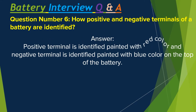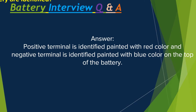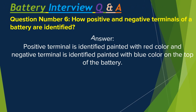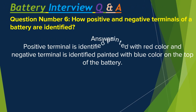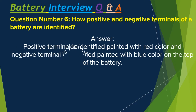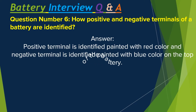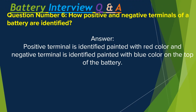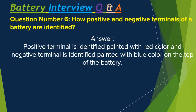Question number six: How are the positive and negative terminals of a battery identified? The positive terminal is identified by being painted red and the negative terminal is identified by being painted blue, on the top of the battery.